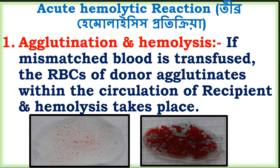Acute hemolytic reaction involves tibri hemolysis due to incompatible blood (asangatya rakhtodaniya), resulting in agglutination and hemolysis. If mismatched blood is transfused, the RBCs of the donor agglutinate within the circulation of the recipient's blood, and hemolysis takes place.